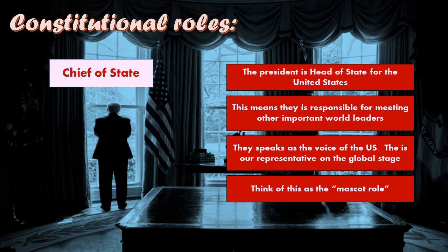The first of these is that the president is what we call the chief of state, or in political science we'd call this the head of state. This means that the president is the ceremonial leader of the United States — they symbolize the nation. In day-to-day business, the president is responsible for meeting important world leaders and figures, such as the Pope or the Queen of England. The president represents the United States in these meetings and speaks as the voice of the country, symbolizing the feelings of the nation.